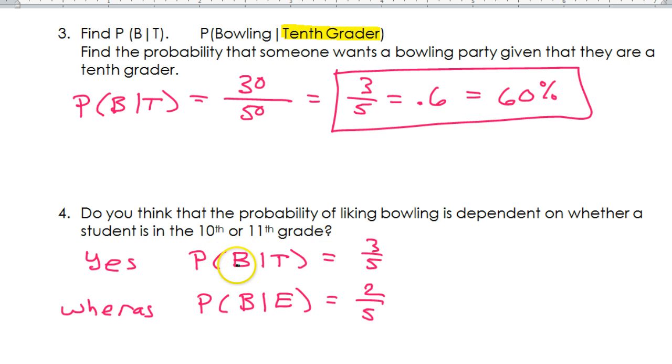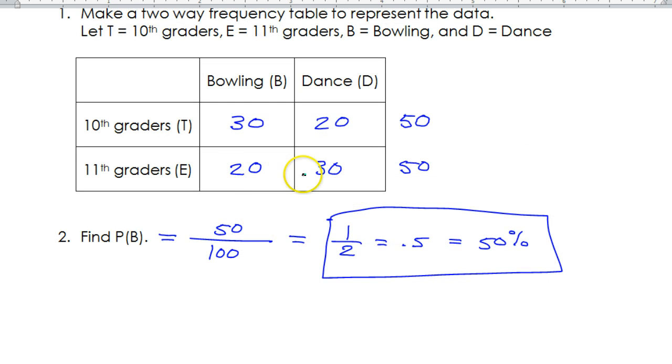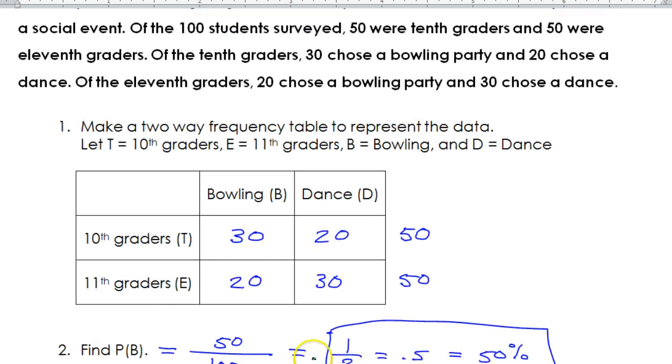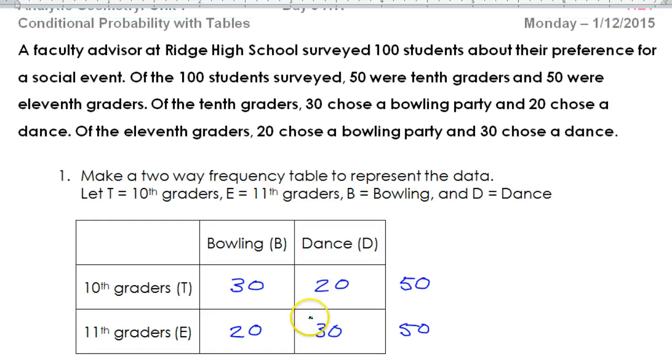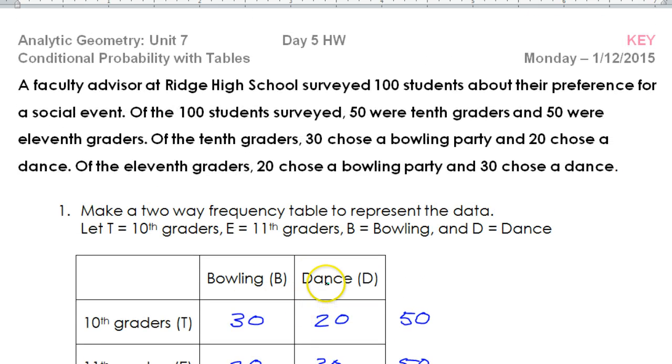Because, as we saw up here, the probability of picking someone who wants bowling, given that we're dealing with 10th graders, was 3 fifths, whereas the probability of picking someone who wants bowling, given that we're dealing with 11th graders, would only be 2 fifths. And of course, I got that right here. 20 out of 50 is 2 fifths. Alright, this was a very short lesson, so that's the end. I hope it was helpful.